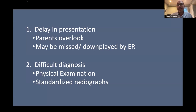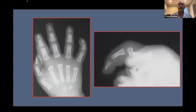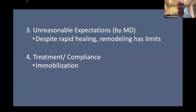Diagnosis can be difficult because examination in a young, unhappy child is challenging, and obtaining the right radiographs is challenging. You want to understand: is there a rotational component? Is that swelling? Is that a bony abnormality? A subtle fracture on the left image — without a good lateral x-ray you can underestimate it. We sometimes have unreasonable expectations about what will heal, how quickly, and what can remodel. And then there's the challenge with treatment and compliance.